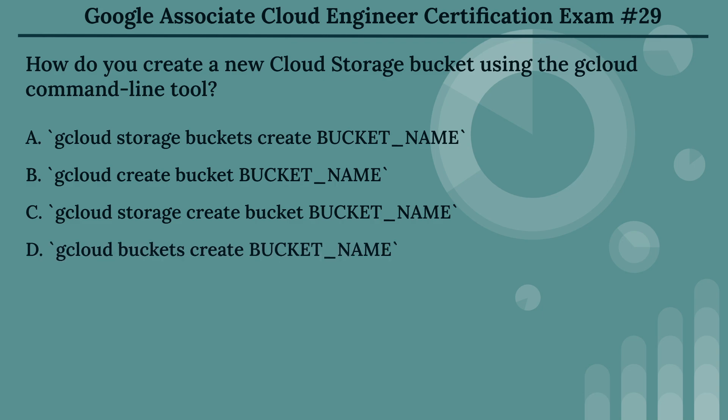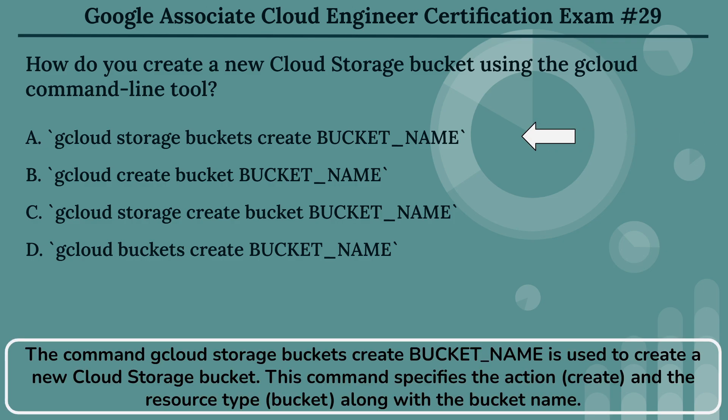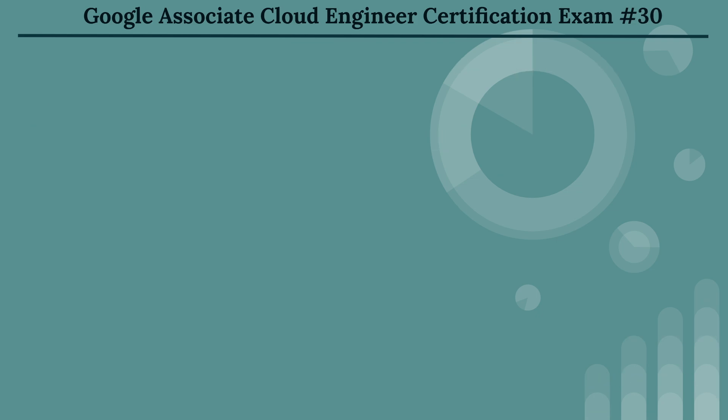The right answer is Option A: gcloud storage buckets create BUCKET_NAME. The command gcloud storage buckets create BUCKET_NAME is used to create a new Cloud Storage bucket. This command specifies the action, create, and the resource type, bucket, along with the bucket name.